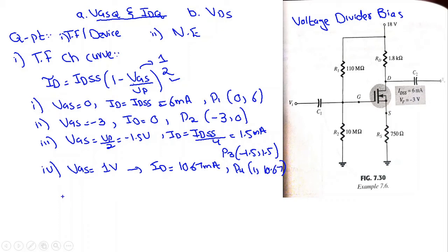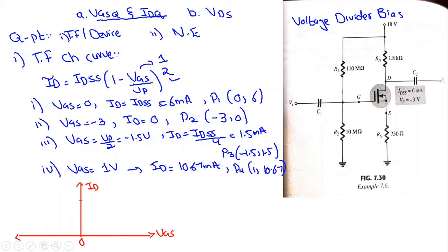Now we draw the graph. The y-axis is the drain current ID and the x-axis is VGS. For the first point, VGS = 0 and ID = IDSS = 6 mA. For the second point, VGS = −3V and ID = 0. We mark −3, −2, and −1 on the x-axis; at −3 we have ID = 0.